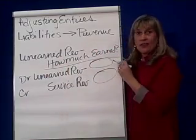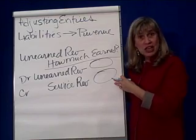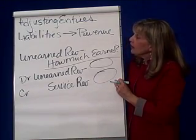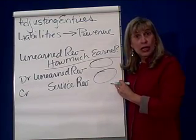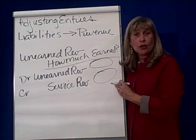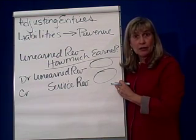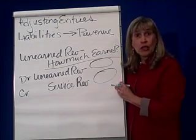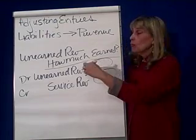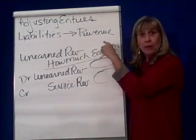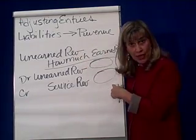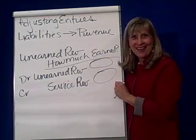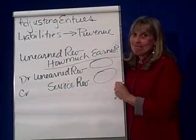That's the key question that this adjusting entry answers. That is an example of when we look at our liability accounts in our trial balance, ask how much has been earned, and make this entry to adjust that account — moving the amount that's earned to the revenue account. That's it.